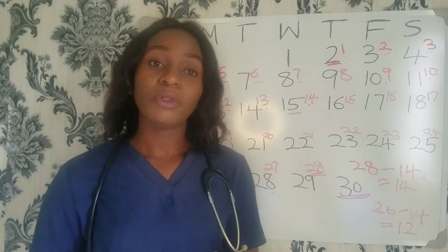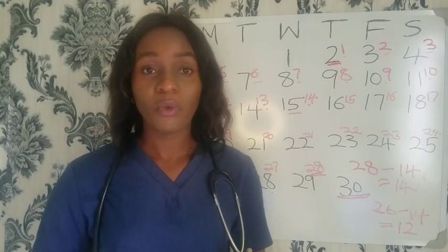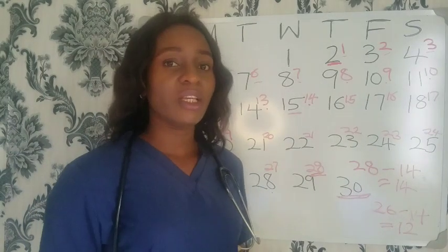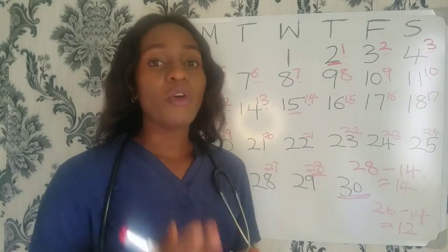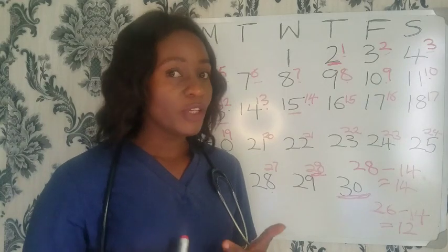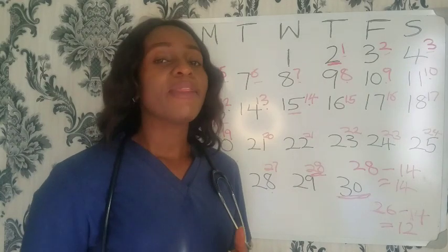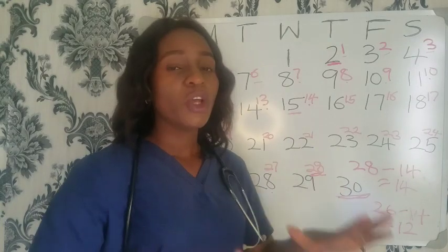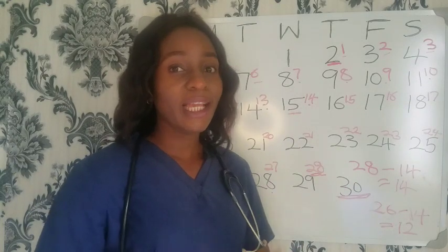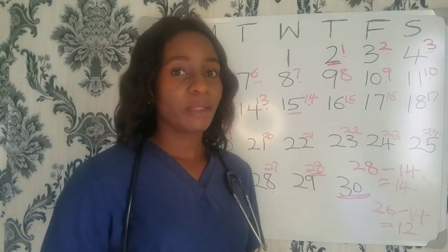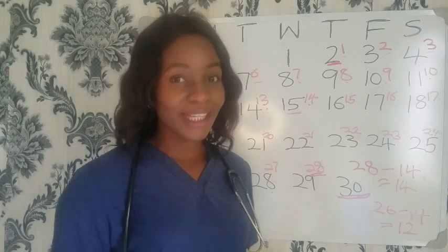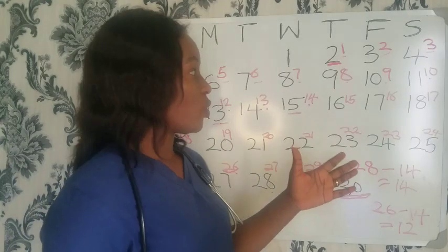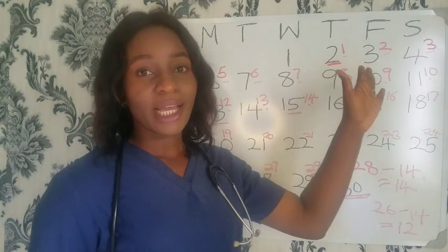If there is no sperm available to fertilize the egg, it dies off quickly. To calculate your fertile days: the five days leading up to your ovulation, your ovulation day, and the day after your ovulation are all considered your fertile days — the periods during which you are likely to get pregnant if you have unprotected sexual intercourse.